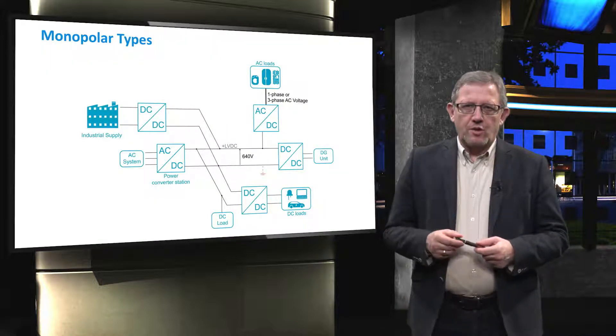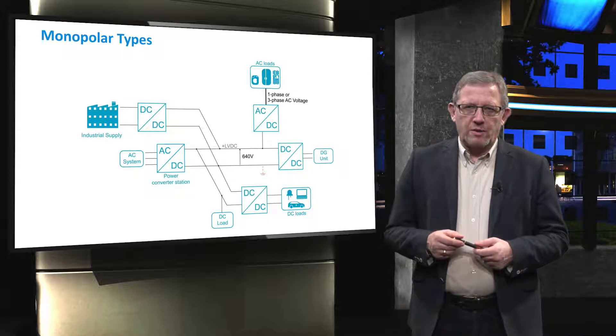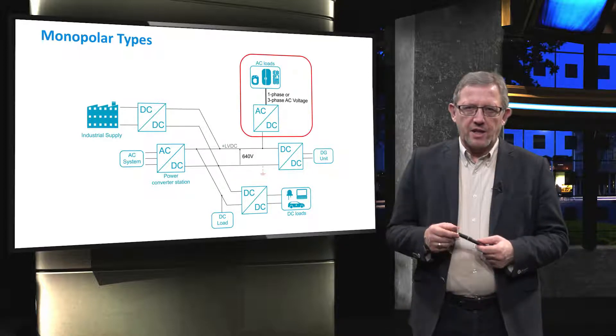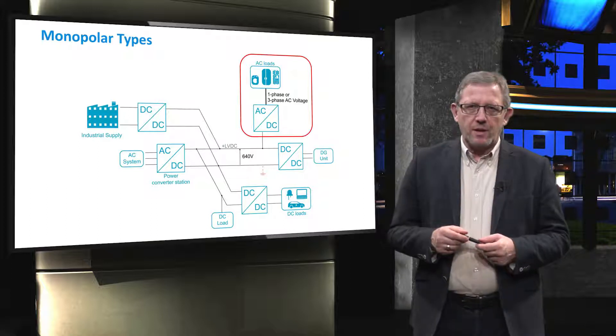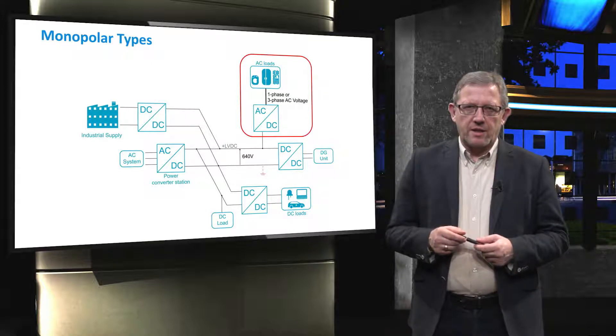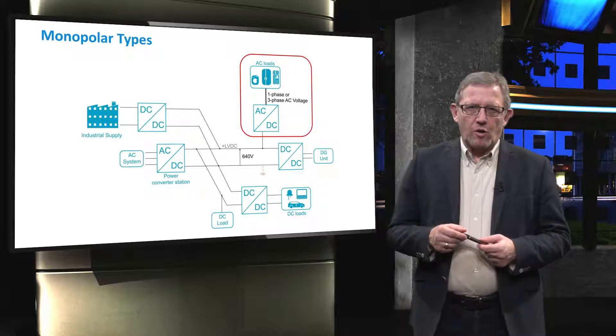The figure shows a monopolar connection of DC microgrid to which AC loads, either single or three-phase, can be straightforwardly connected through an AC to DC converter.